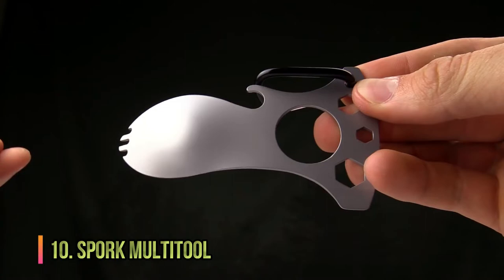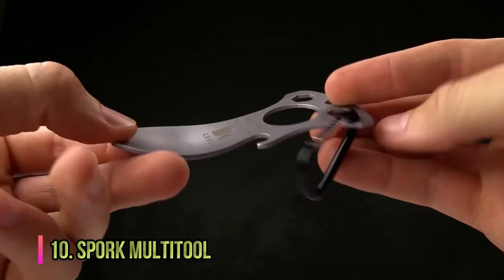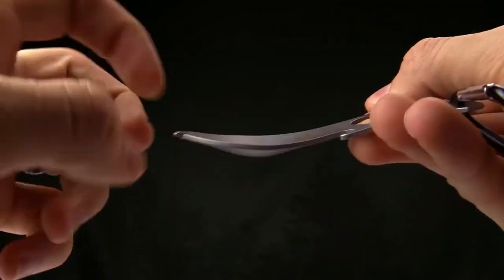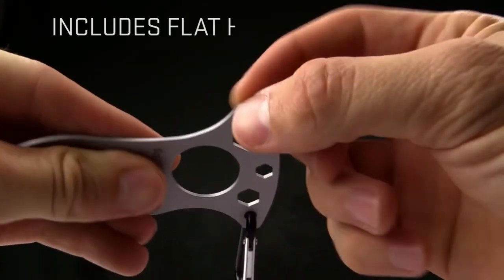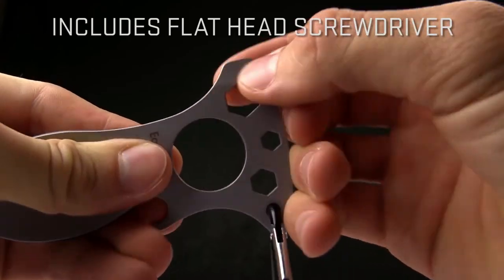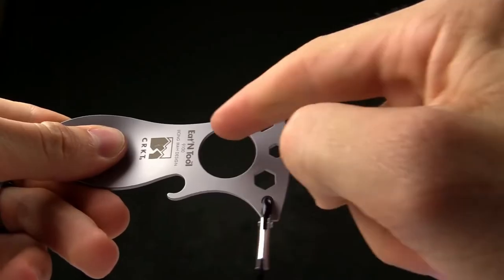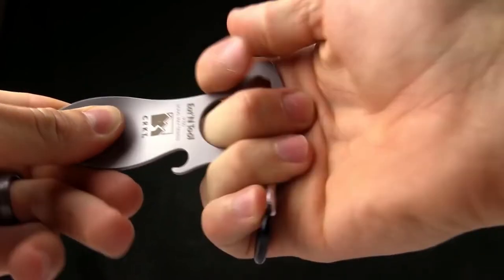Number 10. Spork Multi-Tool. The Spork Multi-Tool has you covered at mealtime and when you need a fast repair. This versatile tool includes a flathead screwdriver, three-position hex wrench, bottle opener, can opener, and pry tip as well as a spork.